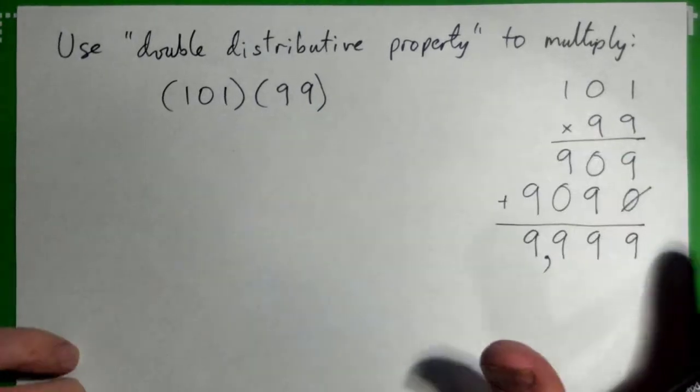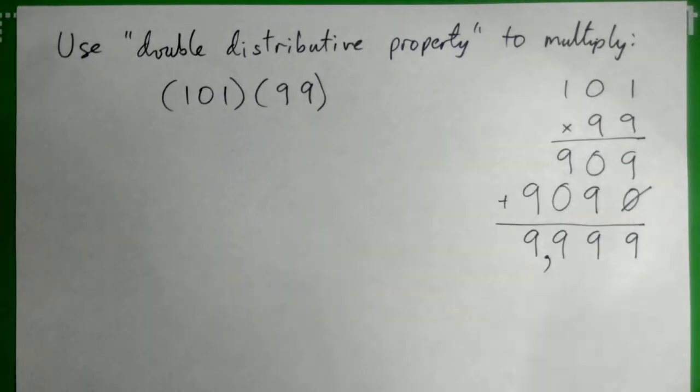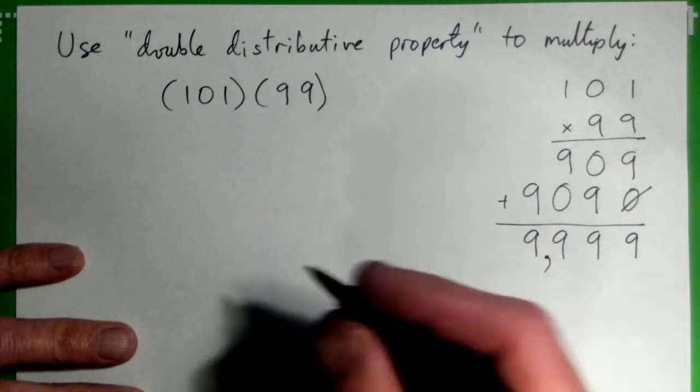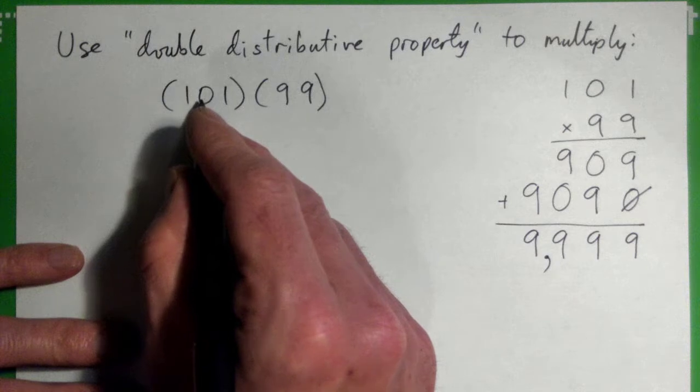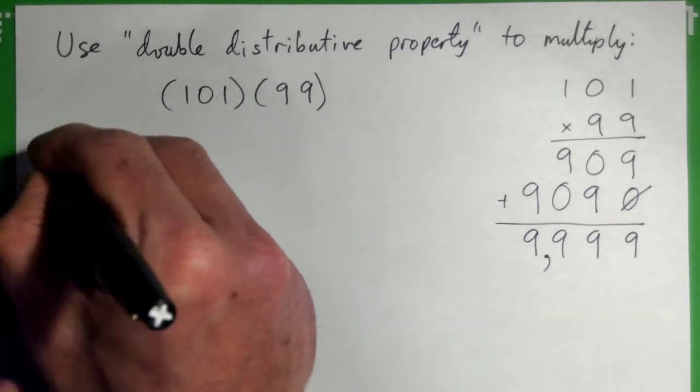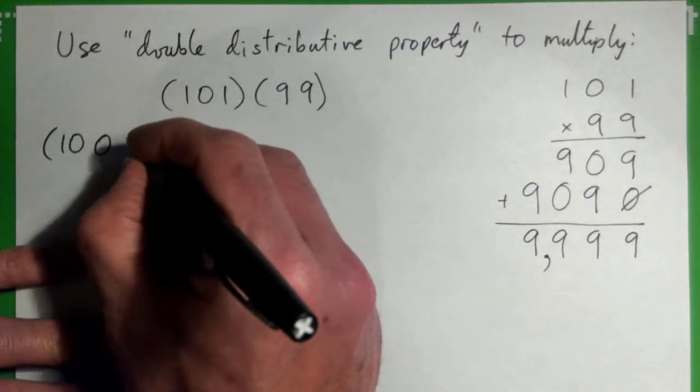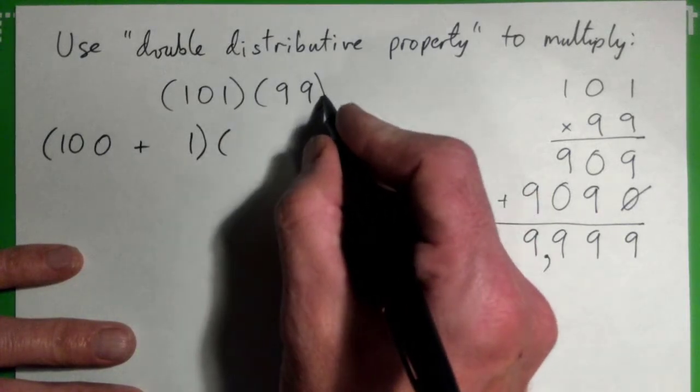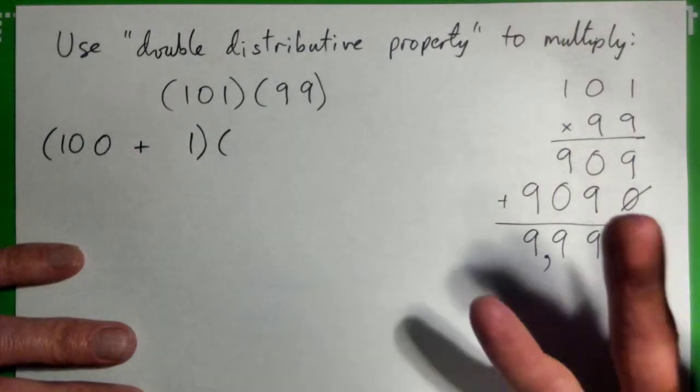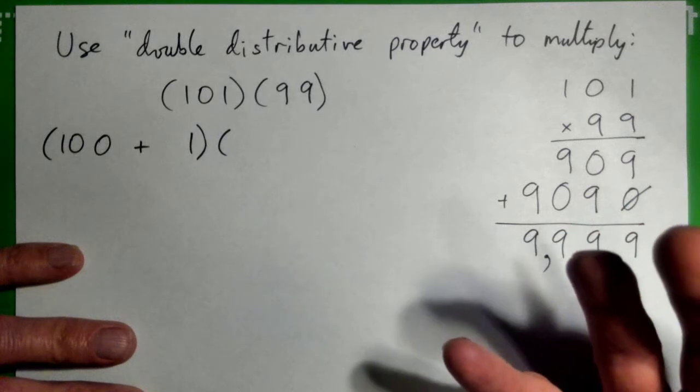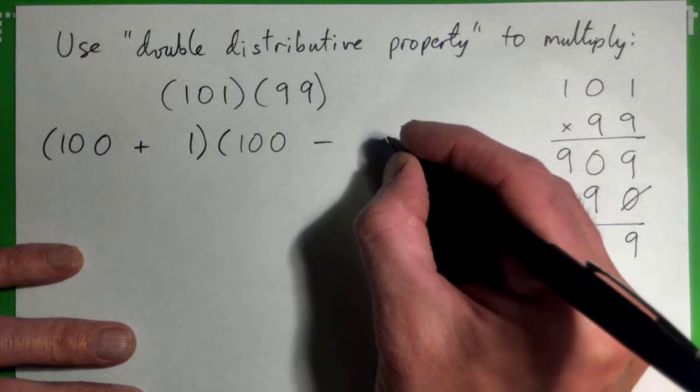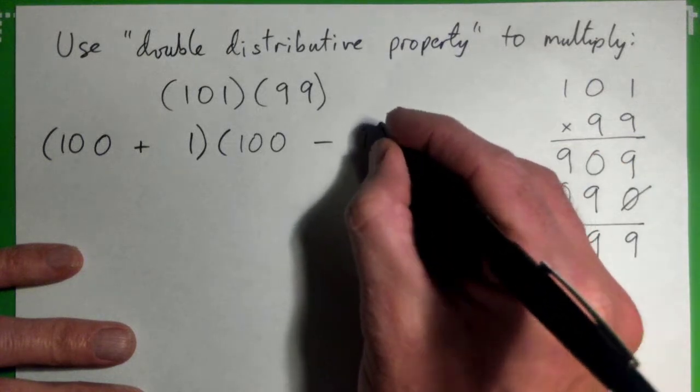So we're going to do this just for fun to see what happens when you apply the double distributive property. So one hundred and one, I'm going to write it like this: one hundred plus one. And ninety-nine is almost a hundred, right? Ninety-nine is a hundred minus what? One. So we're going to write it like that.